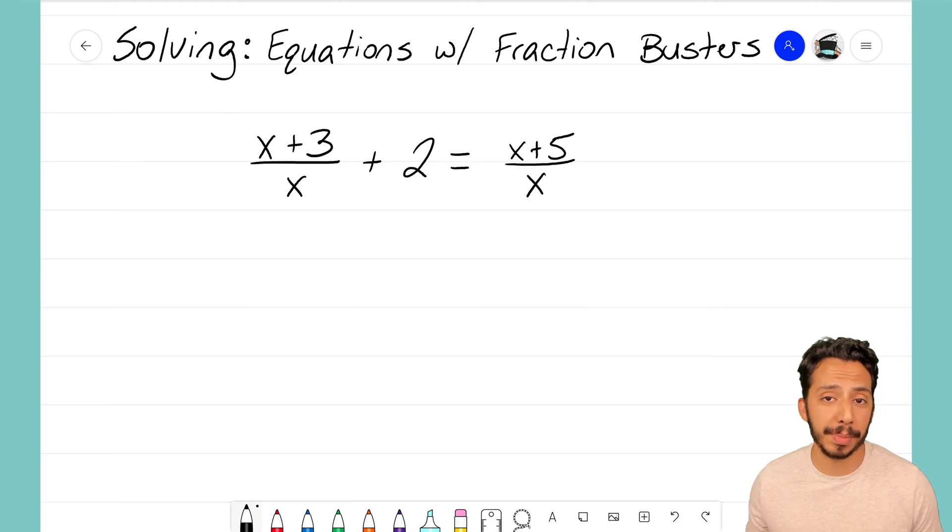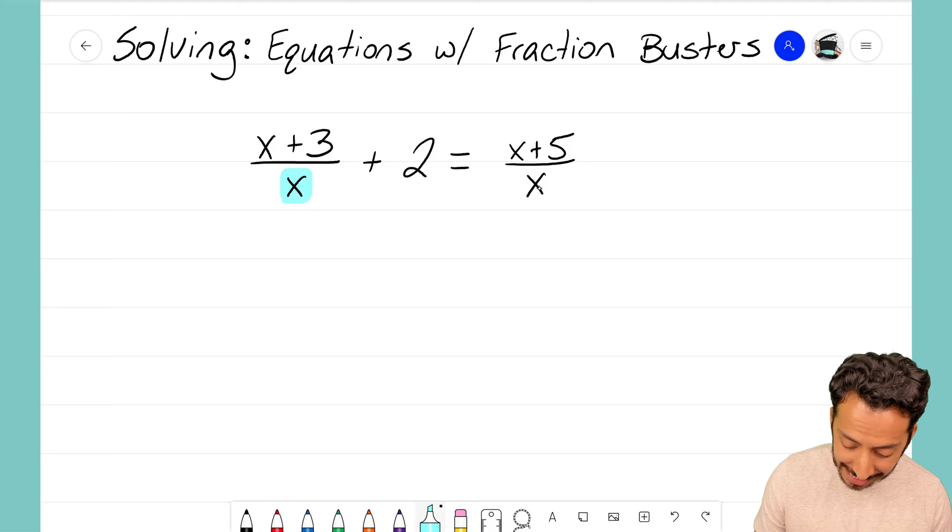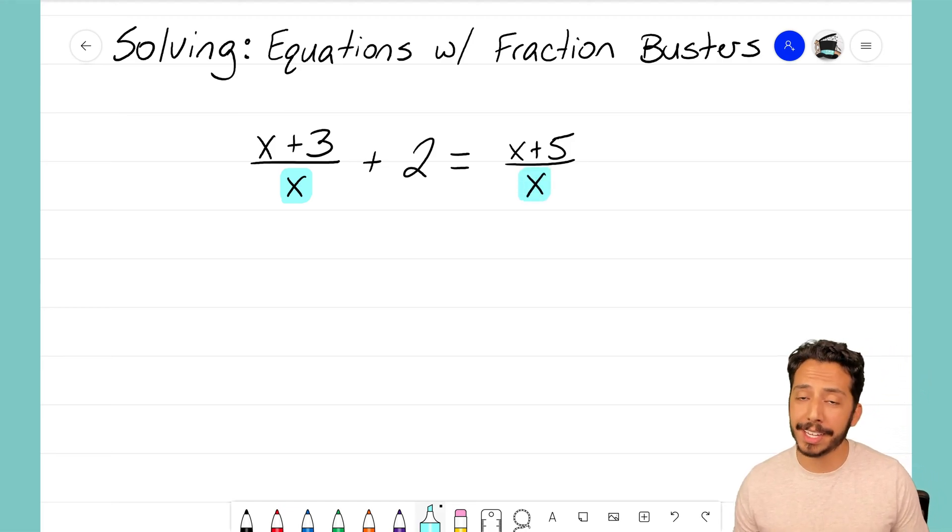I got to say this example does not look anything like my previous videos on fraction busters. Notice that while we might have the same denominator in both of our fractions, they're both x. They are not a number, not a single constant term. That is a variable and we haven't seen an example before where there's a variable in the denominator position.